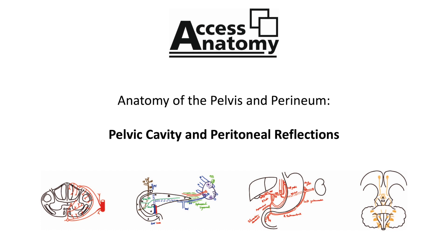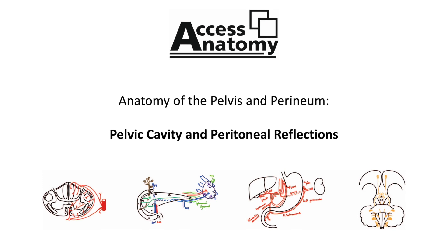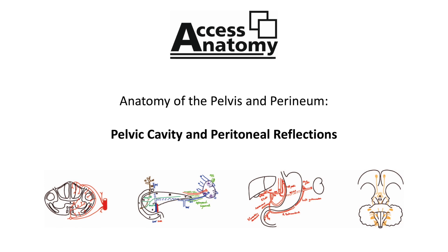This general arrangement of peritoneum is found in the male pelvis. But as the female pelvis contains the uterus, which protrudes between the bladder anteriorly and the rectum posteriorly, the female pelvis doesn't contain a vesicorectal pouch. The female pelvis has the vesicouterine and the uterorectal pouches. If we follow the peritoneum in the female pelvis, it is reflected from the anterior abdominal wall onto the superior surface of the bladder, and from there, the peritoneum is reflected onto the body of the uterus, creating the vesicouterine pouch.